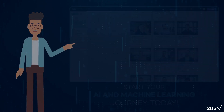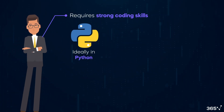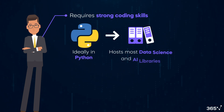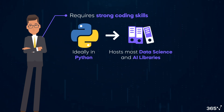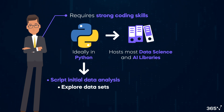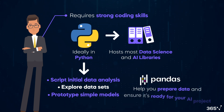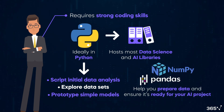Now let's get back to our discussion. AI engineers require strong coding skills, ideally in Python, which hosts most data science and AI libraries. This coding language allows you to script initial data analysis, explore datasets, and prototype simple models. In addition, Python libraries such as Pandas and NumPy can help you prepare data and ensure it's ready for your AI project.